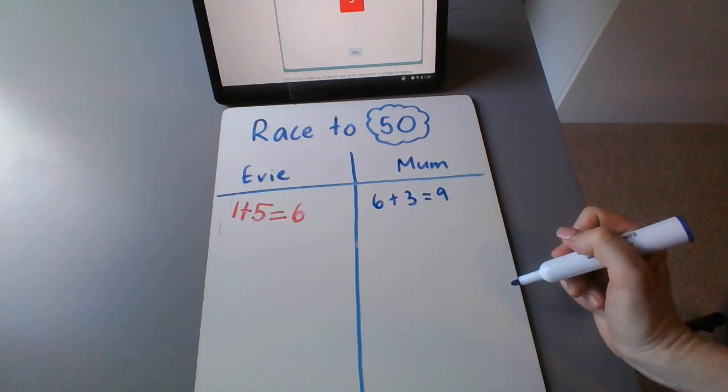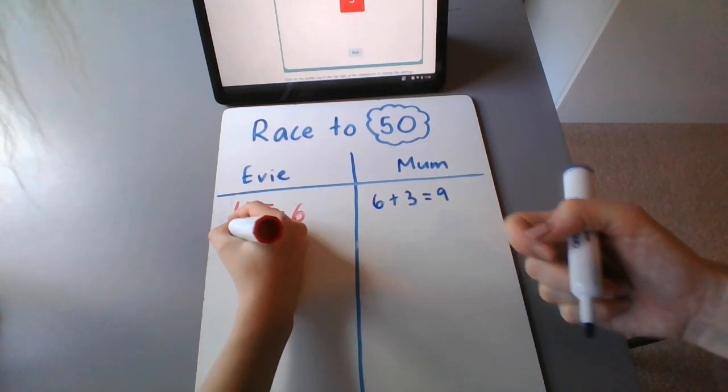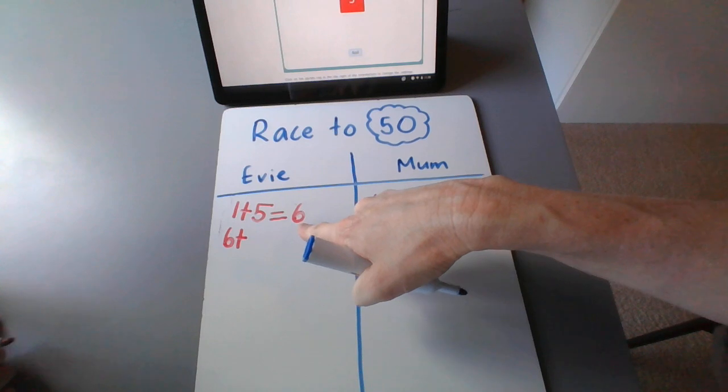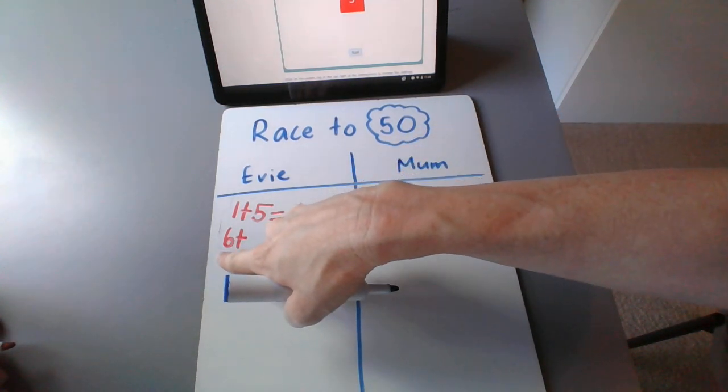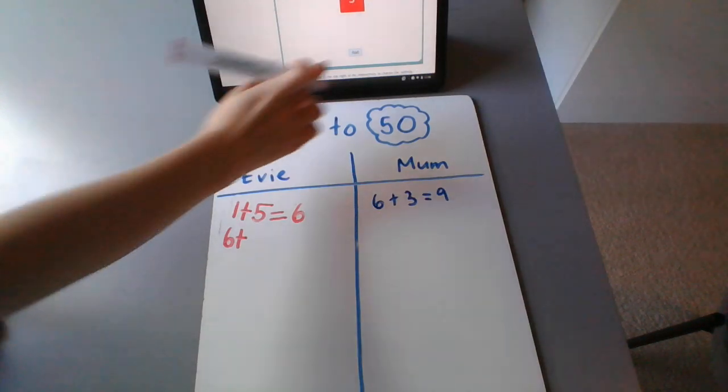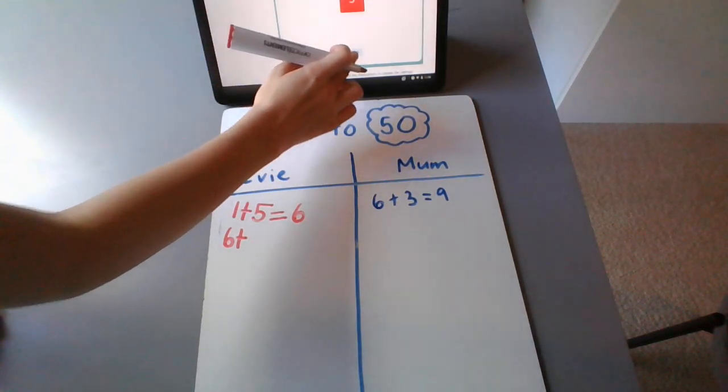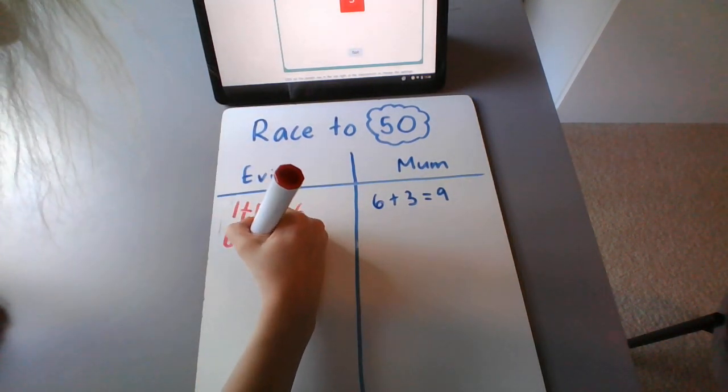It's Evie's turn now. And what she's going to do first is she's going to write her last answer, ready for the next sum. So she's going to use that last answer she came up with to begin her next sum. So she's got six plus, and she's going to roll to see what she's adding to six. Six plus three is her sum.